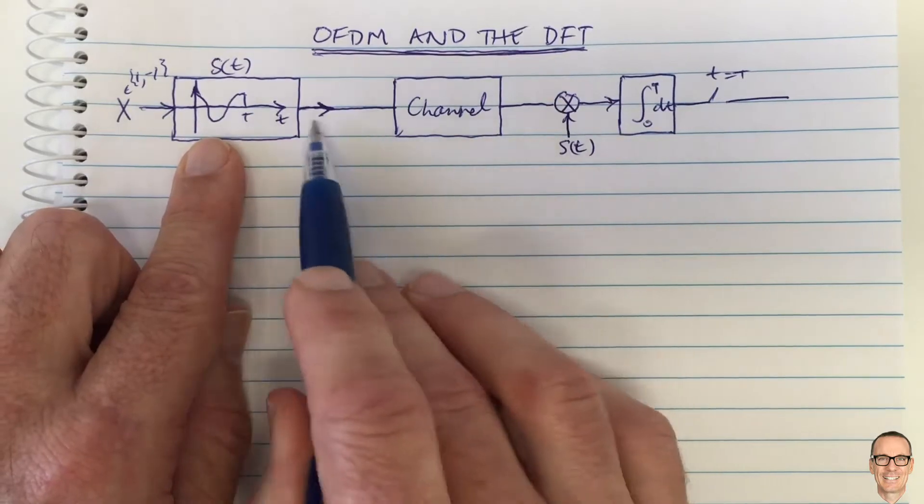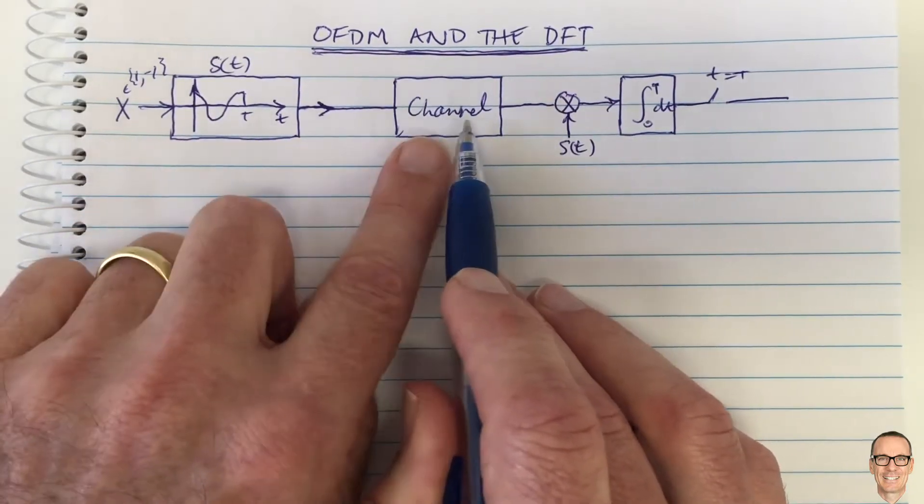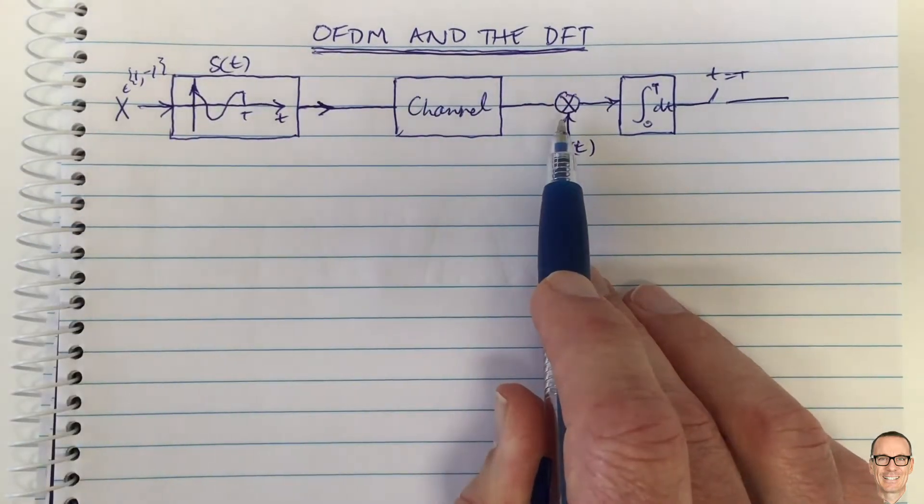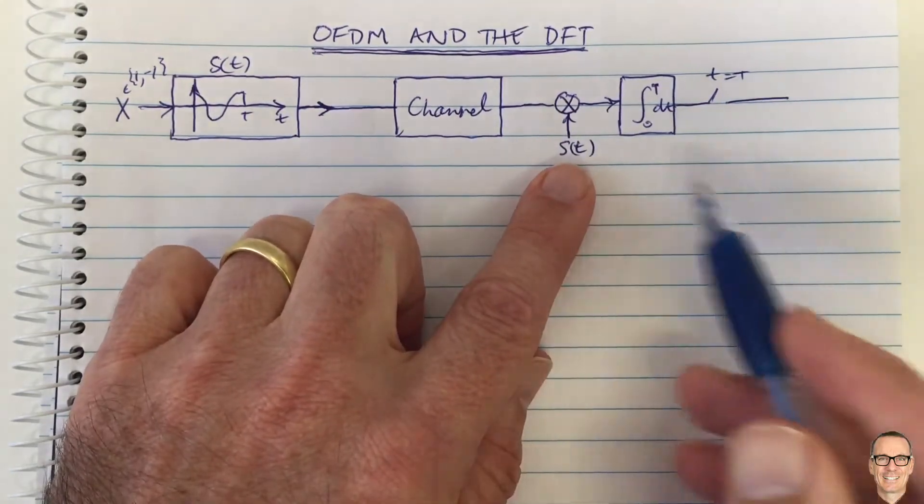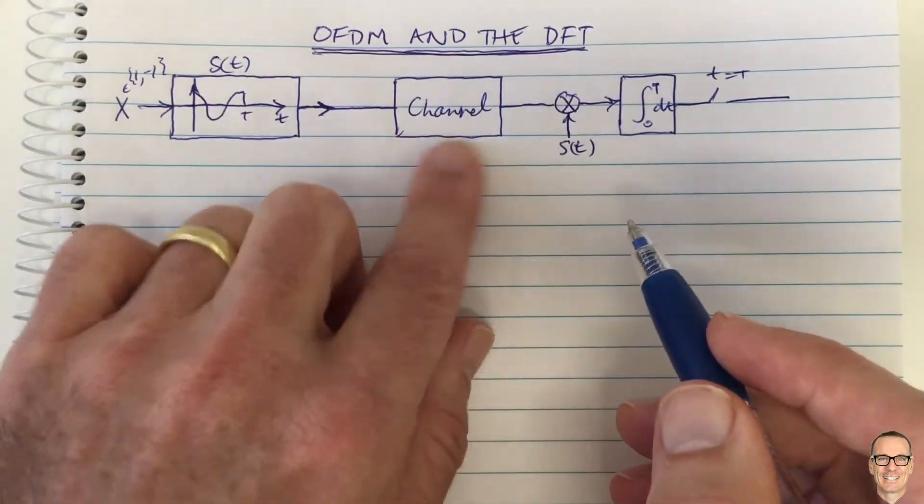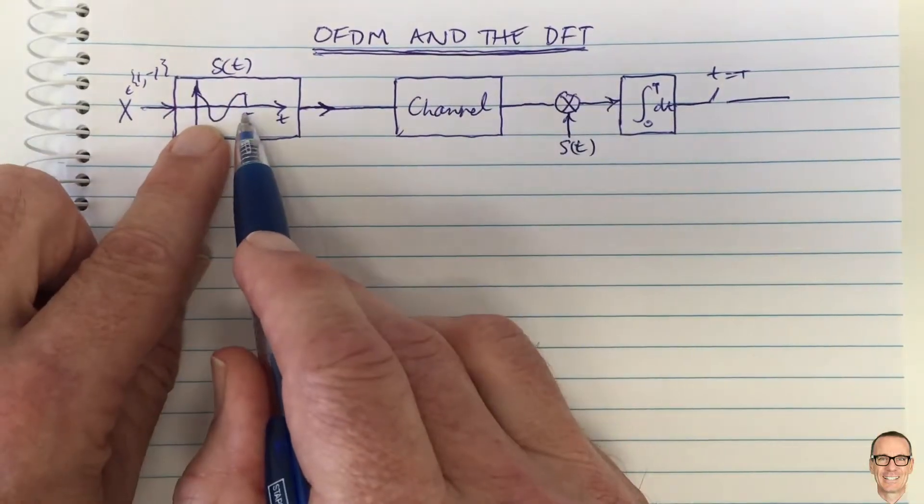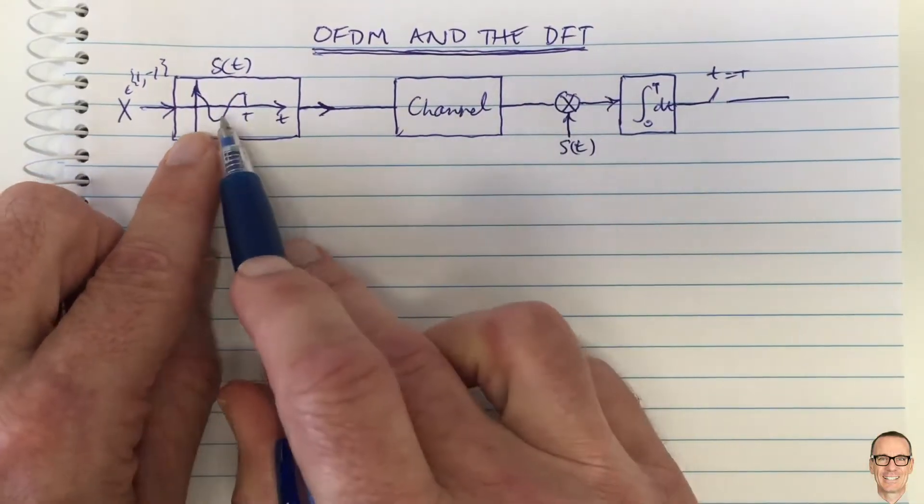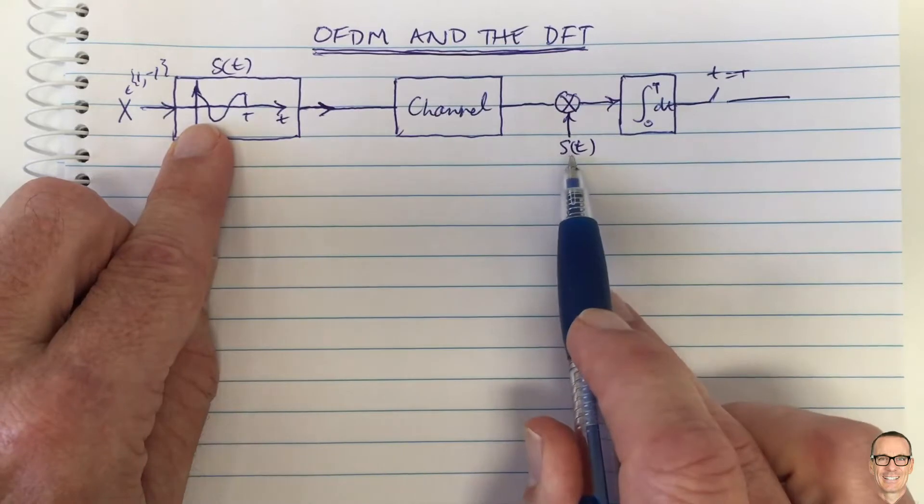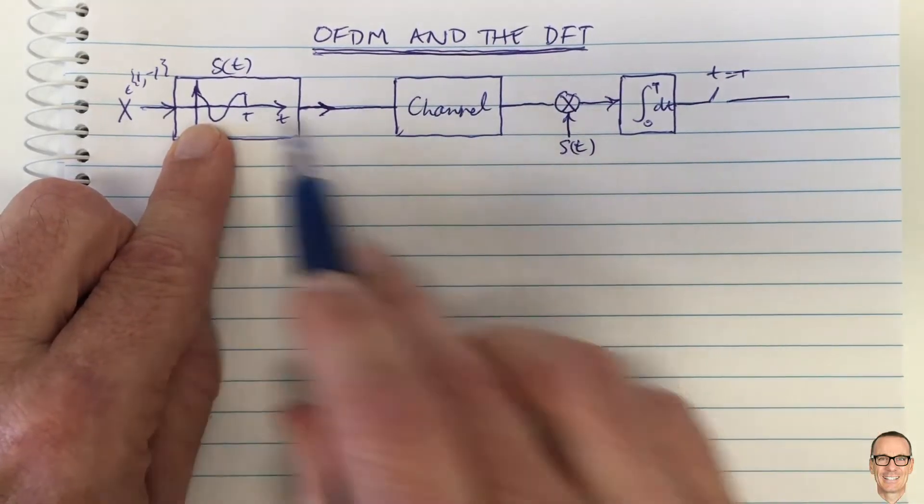We put that into a channel, and then the matched filter can be implemented, which is the optimal thing to do for an additive white Gaussian noise channel. You multiply by the same signal waveform shape.